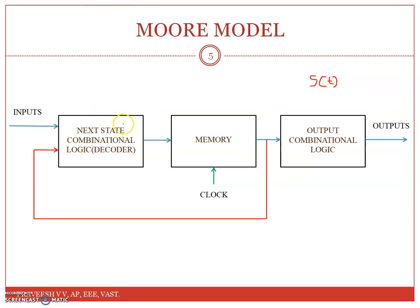In a normal sequential circuit, you will have a next state combinational logic block. This next state combinational logic takes the present state s(t) as input. The next state s(t+1) is a function of s(t) and x(t), combining both present state and present input.